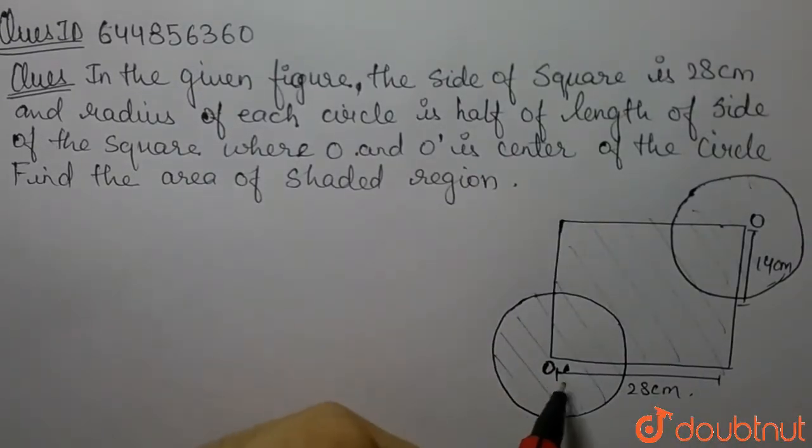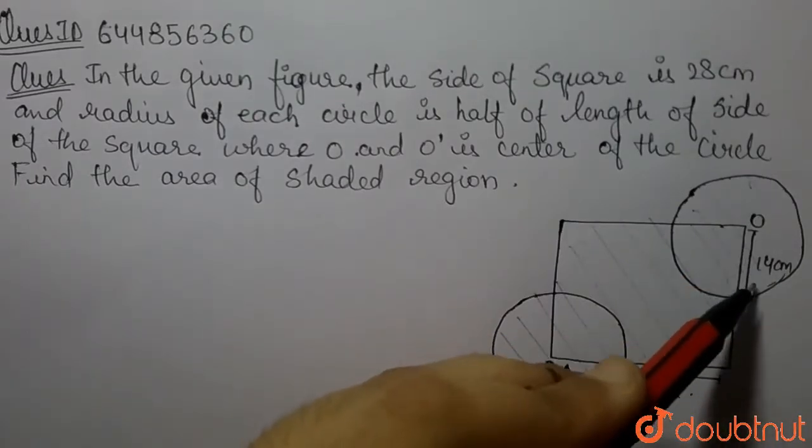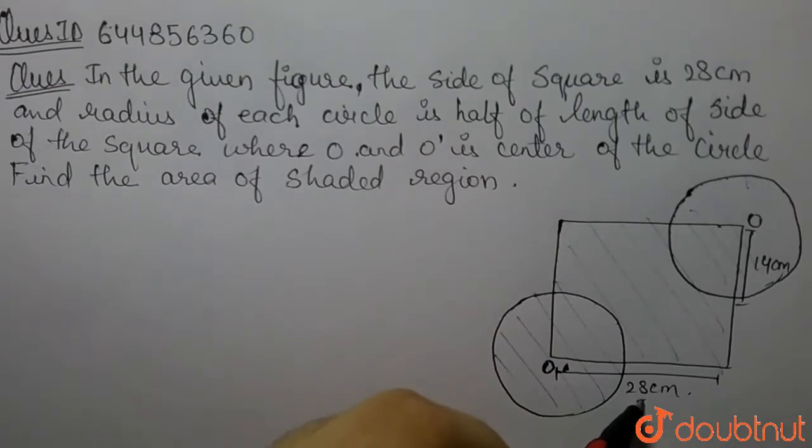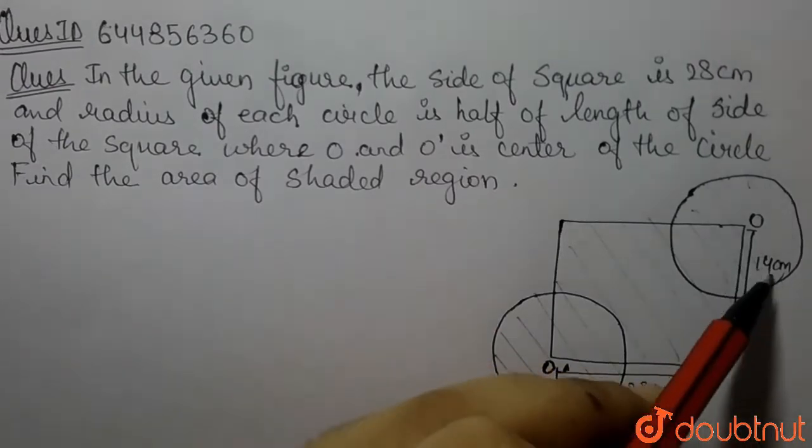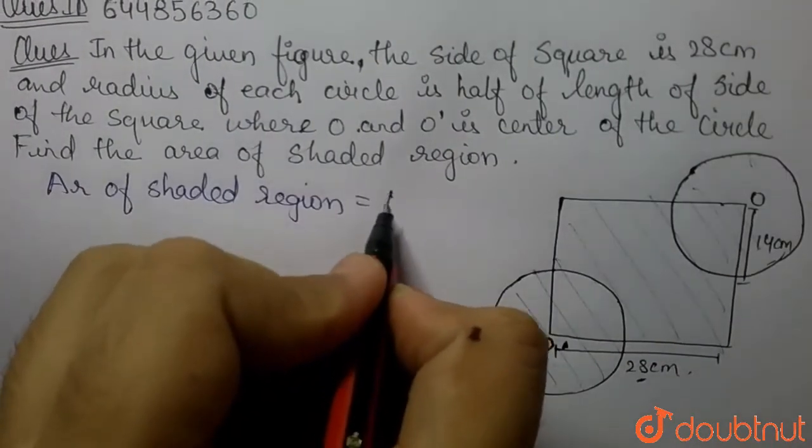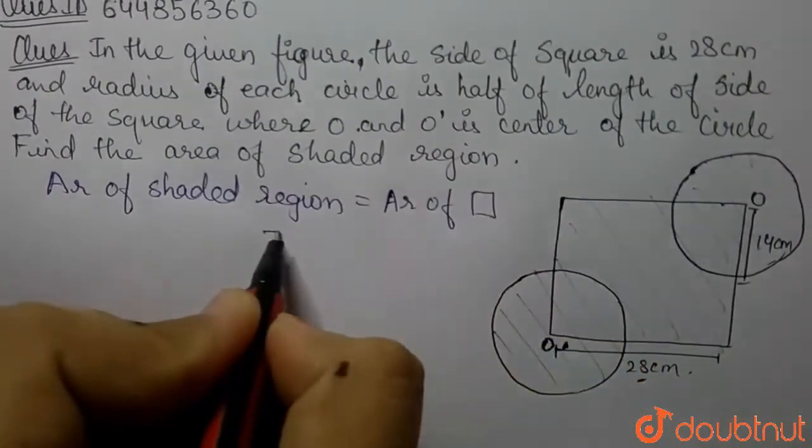It is given in the question that the side of the square is 28 centimeters and the radius of the circle is half of the side of the square, so it equals 14 centimeters. The area of the shaded region is area of square plus two times area of circle.